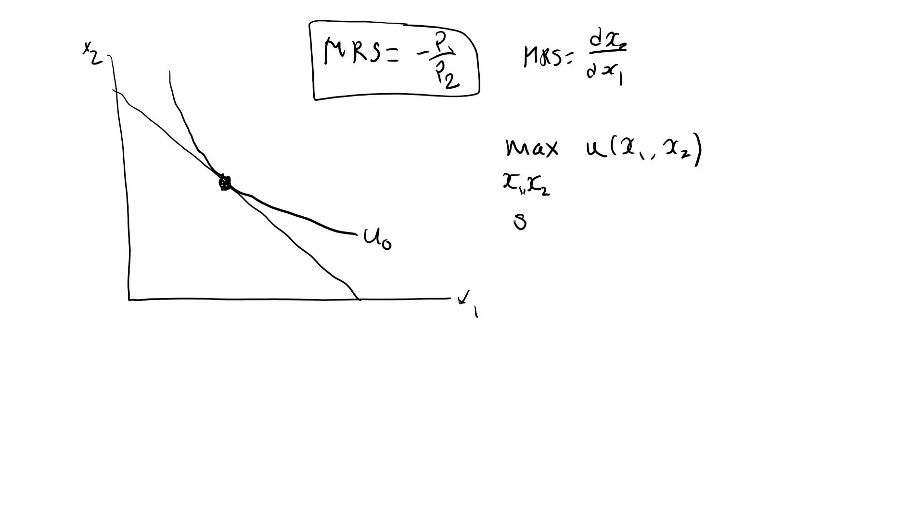because we have to remember that not all values of x1 and x2 are possible. The bundle must be affordable. Therefore, we add a constraint. We type st for such that the constraint is that the cost of the bundle, p1 x1 plus p2 x2,